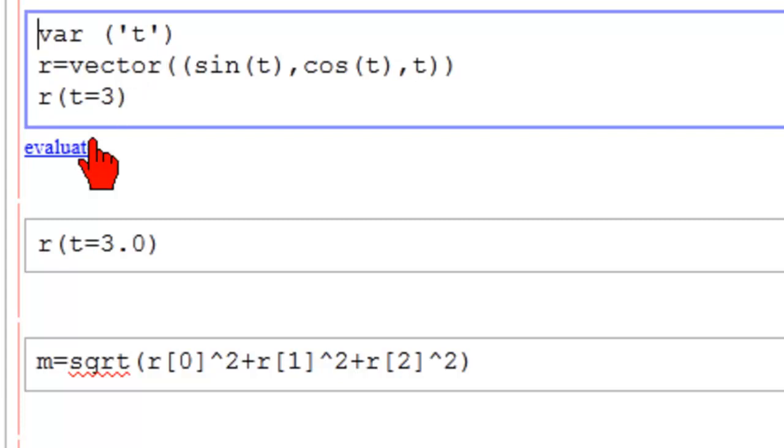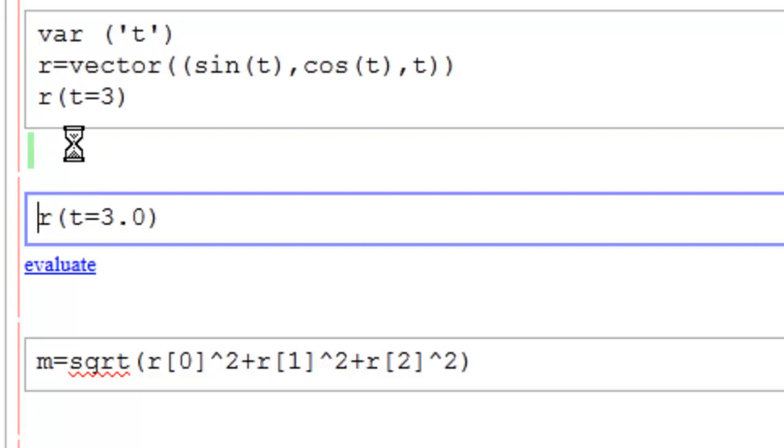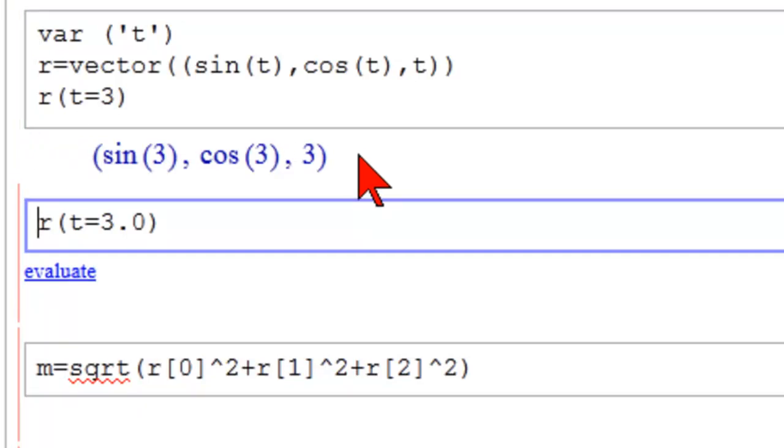Now this is the new part, where we're looking to evaluate this vector function at the value of the parameter t equal to 3. Let's click on evaluate. And notice that we get an exact answer. It just puts 3 in, in place of t.